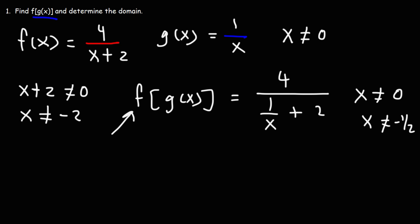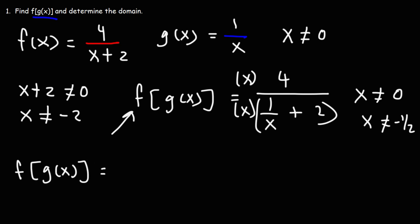Another way to see this is by simplifying the complex fraction. If we multiply the top and the bottom by x, f of g of x looks different. On top we have 4x. On the bottom, x times 1 over x cancels, giving 1, and then x times 2 gives 2x.